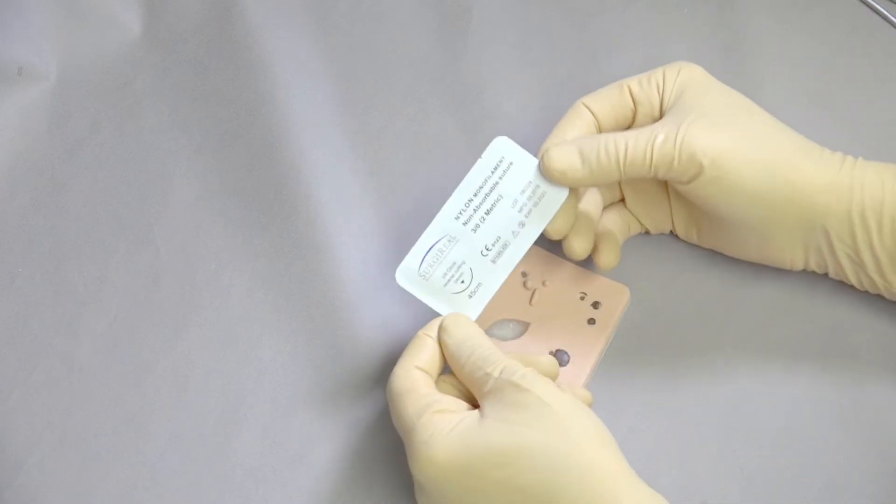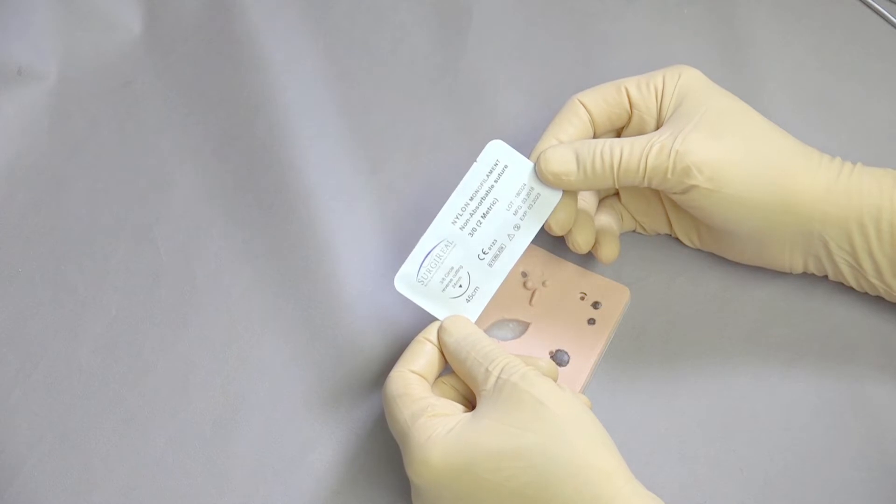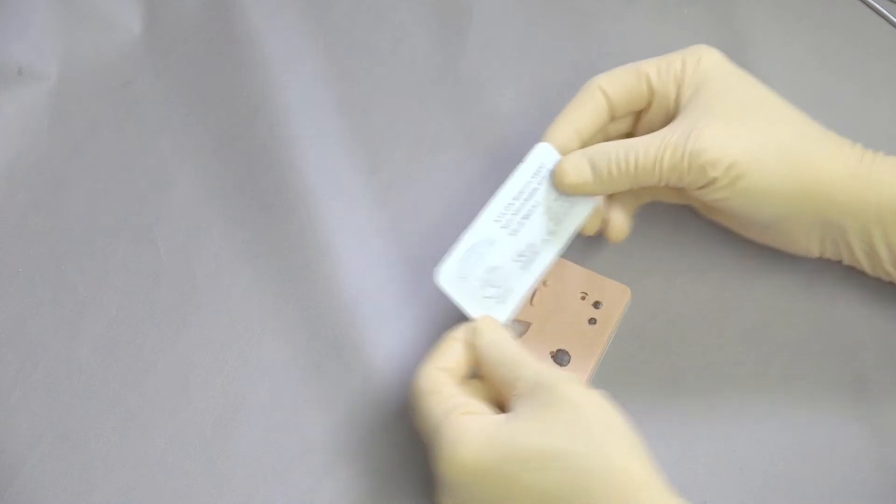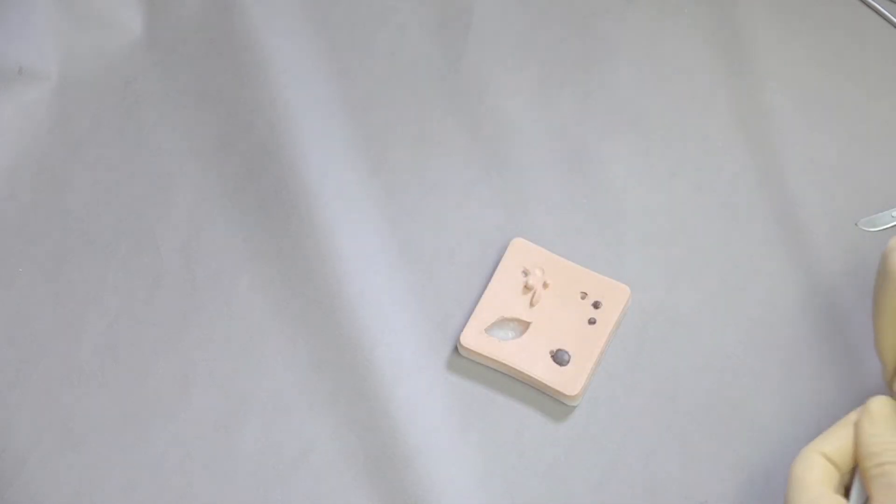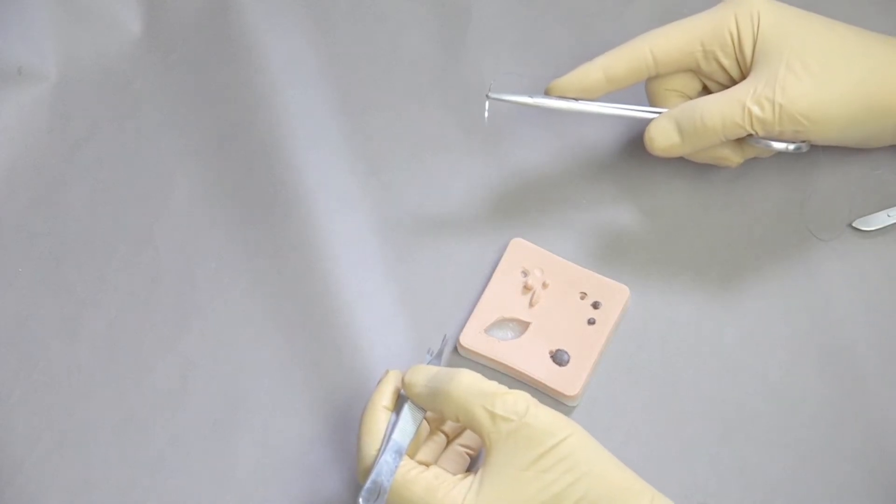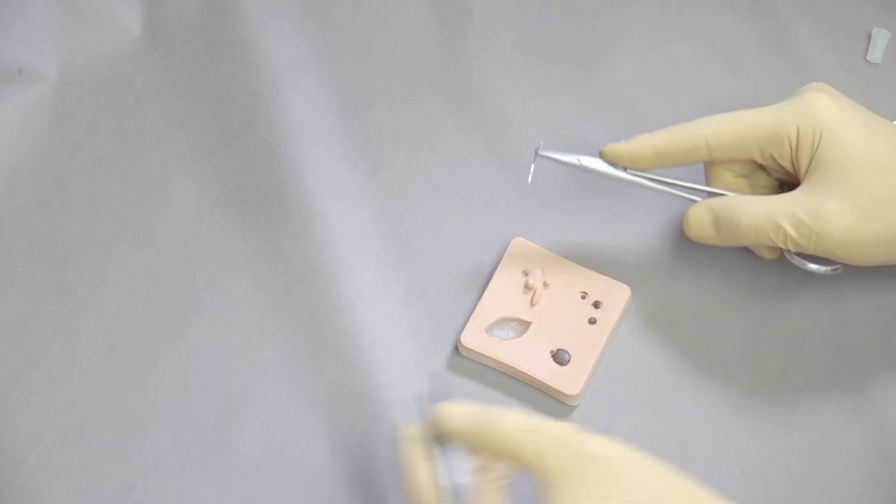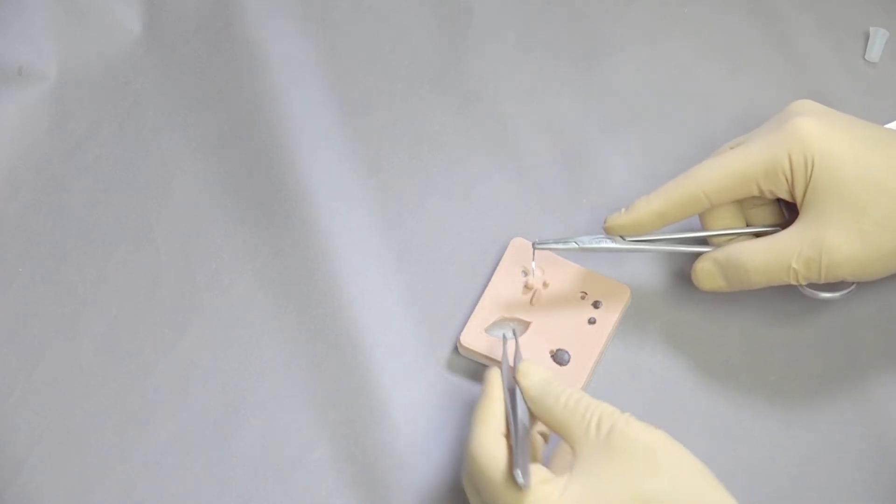To close it we can use some 3-0 monofilament nylon in this case on a reverse cutting needle. If there was a lot of tension you might go a slightly larger suture material but this should work fine. For looking at the basics of the suture patterns go ahead and check out the suture pads. The one-layer pads will give you an example of the simple interrupted, simple continuous as well as tension relieving patterns.